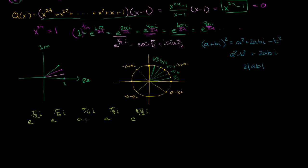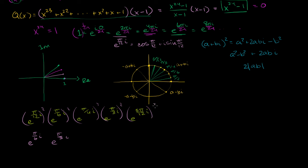Now we're going to square each of them. It's nice to leave them in exponential form — squaring just multiplies the exponent by 2. So we get e^(π/6·i), e^(π/3·i), e^(π/2·i), e^(2π/3·i), and e^(5π/6·i).